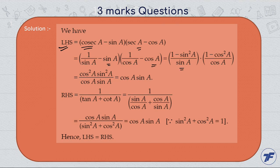Now again using the identity sin square A plus cos square A is equal to one, one minus sin square A becomes cos square A, and similarly one minus cos square A becomes sin square A. Canceling powers, we get cos A sin A. This is the value of LHS.